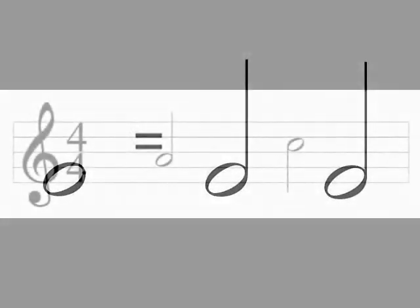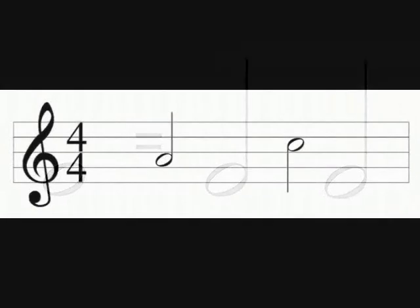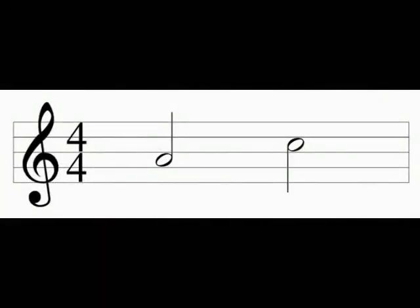Generally speaking, if you draw that on the stave and the note is below the middle line — below the B on a treble clef — that symbol's stick will go upward. Whereas if it's in the top half of the stave, you would draw it with the stick on the left hand side going down. It's a more efficient use of space. So that's the minim, the half note.